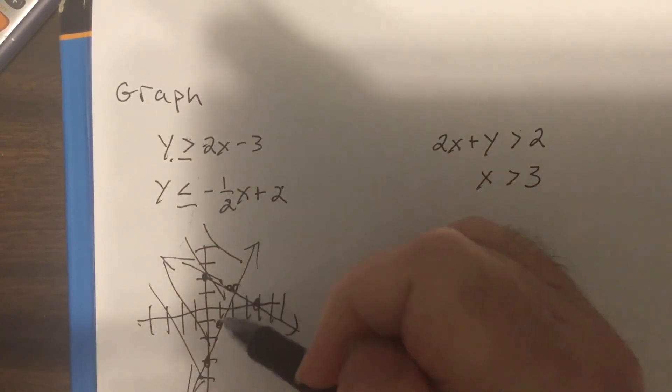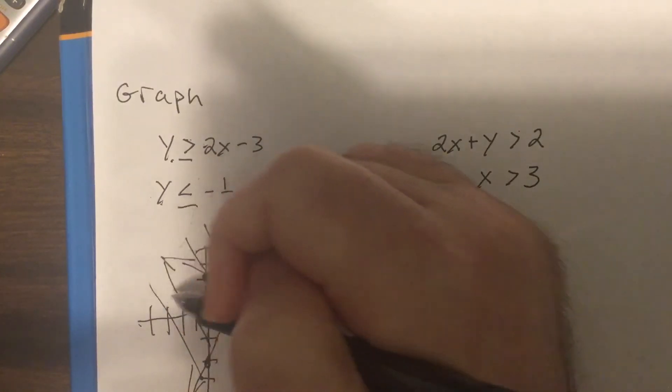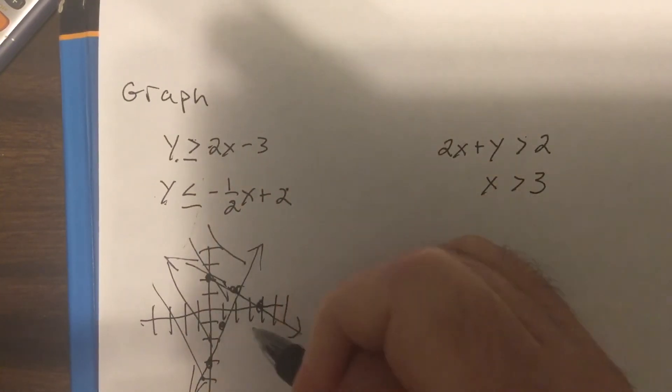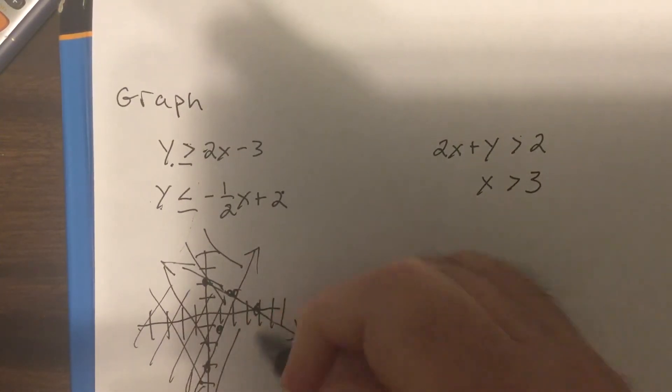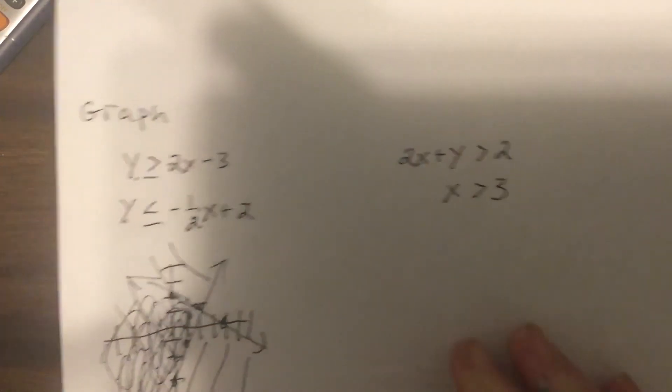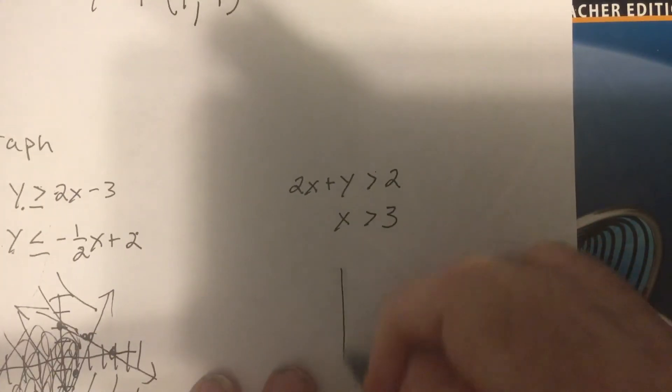Then pick 0, 0 again. Is 0 less than 0 plus 2? Is 0 less than 2? Yep. So that would be this. And I see the overlapping, so right in there. This one.